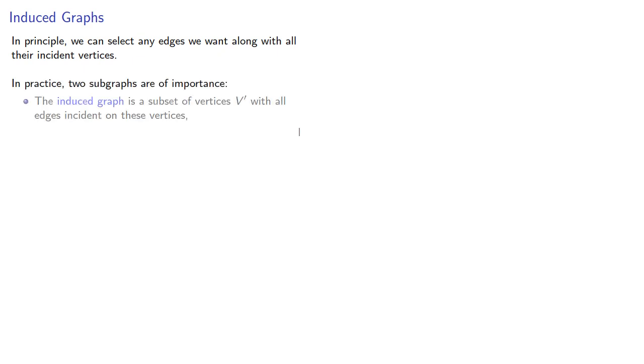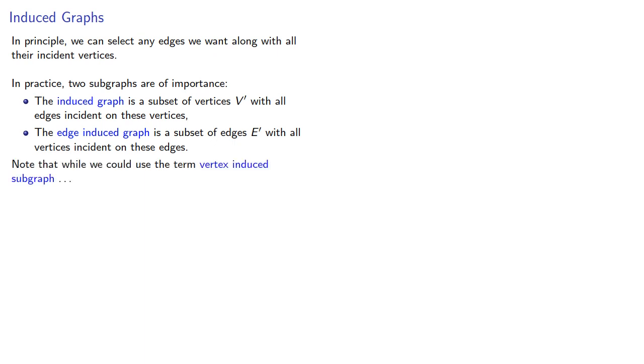The induced graph is a subset of vertices V' with all edges incident on these vertices, and the edge-induced graph is a subset of edges E' with all vertices incident on these edges. Note that while we could use the term vertex-induced subgraph for the first one, we don't. As a general rule, unless otherwise specified, base things on the vertices.